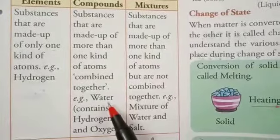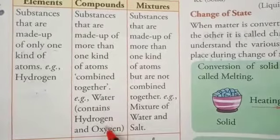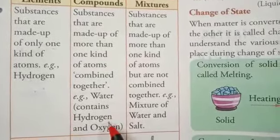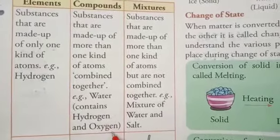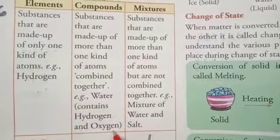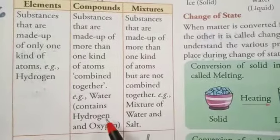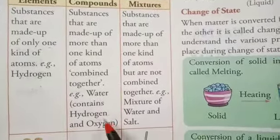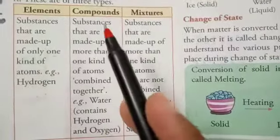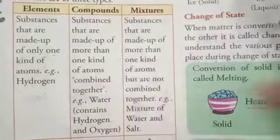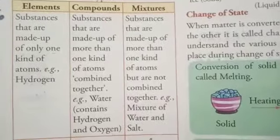For example, water. In water, there are two types of atoms — one is hydrogen and one is oxygen. So because there are more than one kind of atoms combined, what do we call it? Compounds.